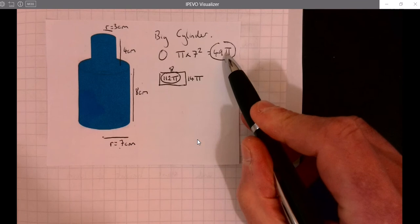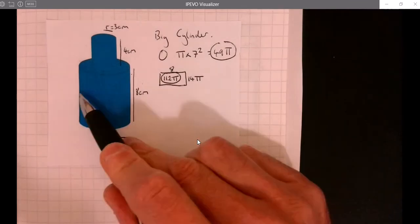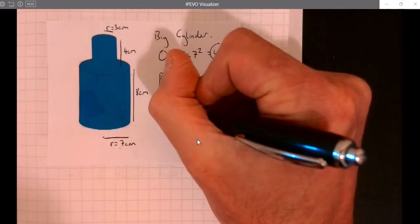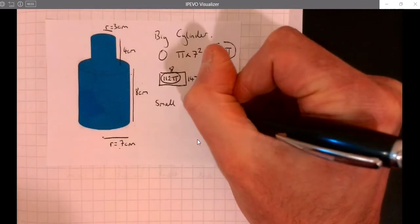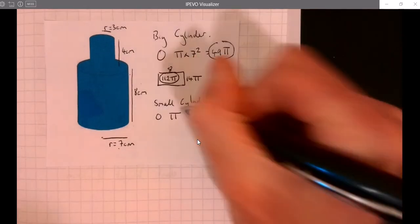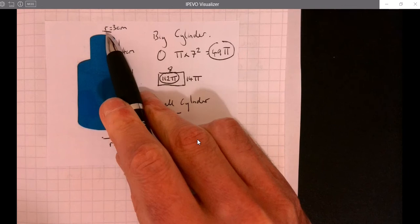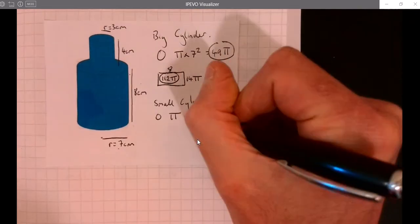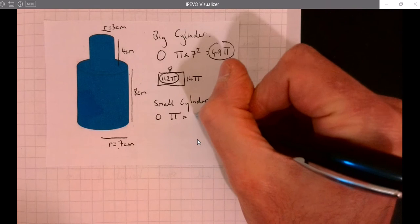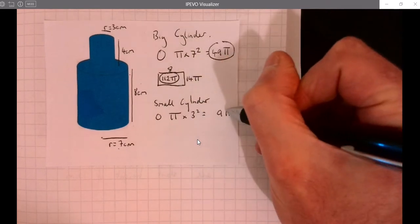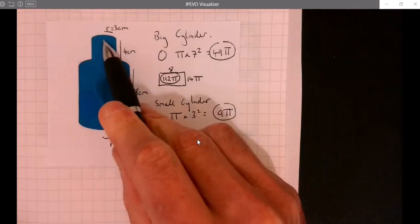We've got the bottom circle, we've got the curved bit, then I've got the awkward bit I'll come back to. Let's do the top circle. Let's now look at the small cylinder, we've got a circle, π × r² so r on this occasion is 3, × 3² = 9π. That's the top circle.